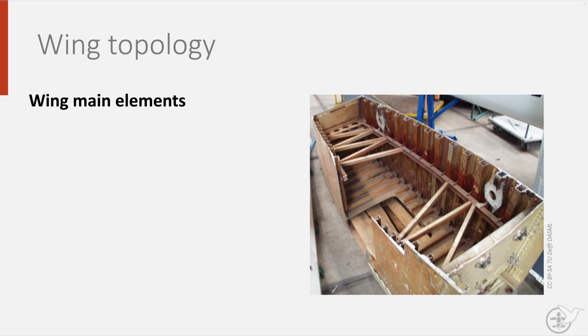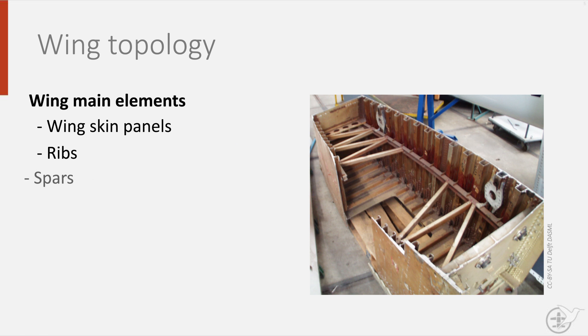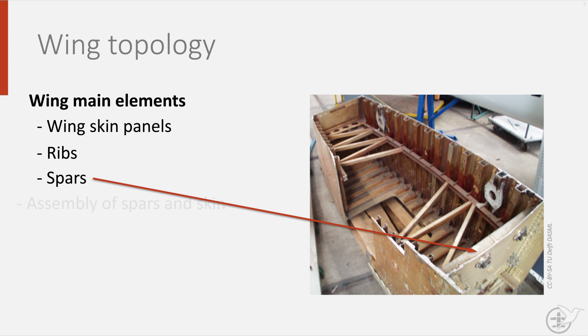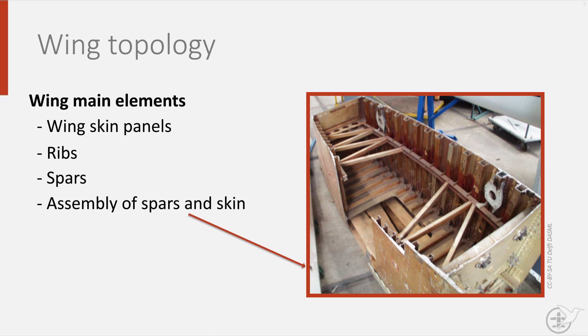The topology of a wing consists of the wing skin panels forming the outer shape, the ribs that maintain the aerodynamic shape and that can be used to introduce loads into the wing, and the spar that keeps the wing from bending. Finally, the assembly of spars and skin together form a coherent whole that resists the torsion and twisting of the wing. Hopefully this will give you some basic understanding of how aircraft and spacecraft structures are built up.